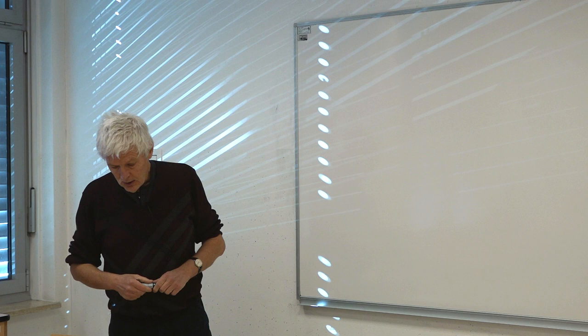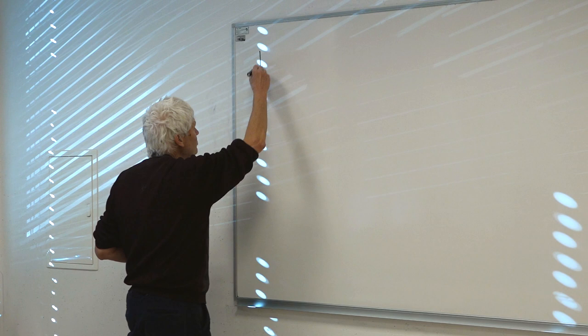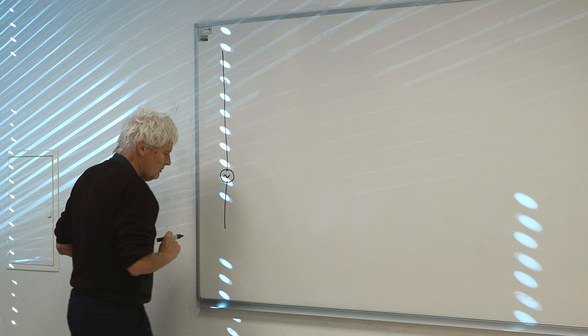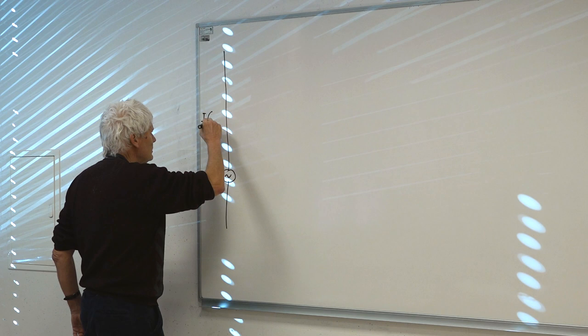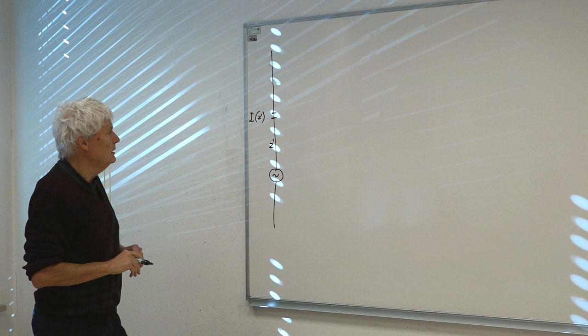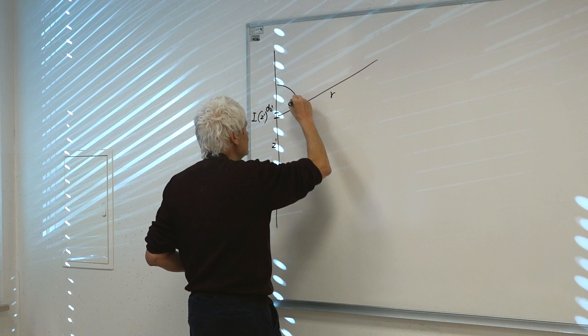Starting from last time: we had a rather simple problem — a wire where we guessed the current distribution. The feed point need not be symmetrical. On this wire we know the current distribution I of z-prime, where z-prime is the coordinate of the source. We examine how much this radiates at a certain point in the far field, in spherical coordinates.